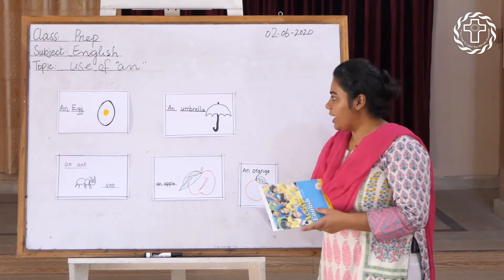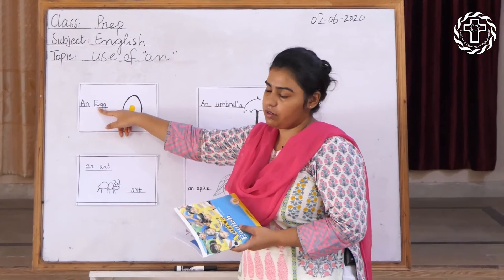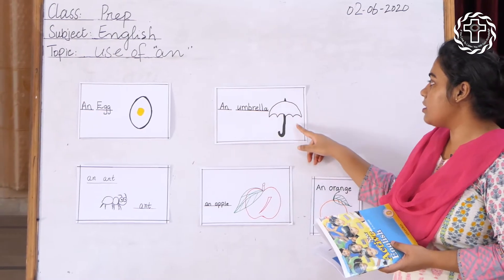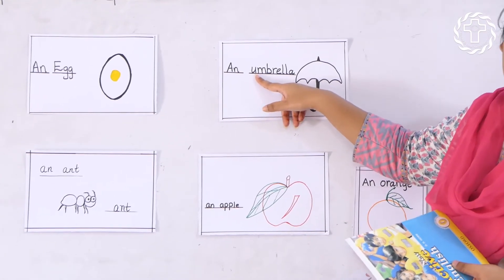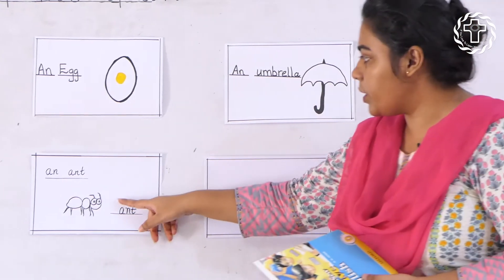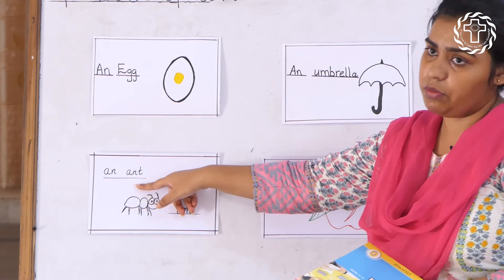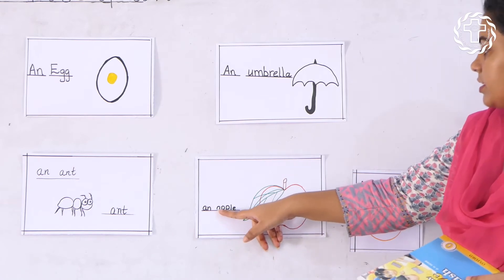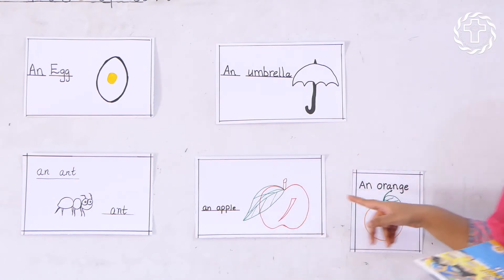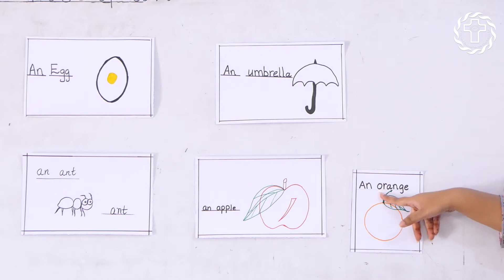Like 'an egg' — the letter E starts with a vowel sound. The second one is 'an umbrella' — the letter U starts with a vowel sound. The third one is 'an and' — the letter A starts with a vowel sound. The next one is 'an apple' — the letter A starts with a vowel sound. The last one is 'an orange' — the letter O starts with a vowel sound.